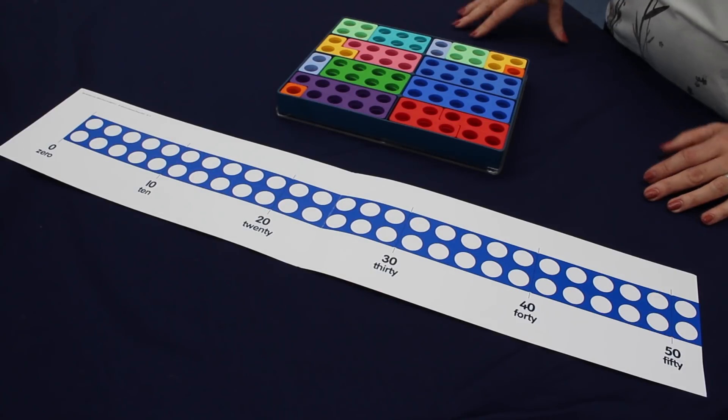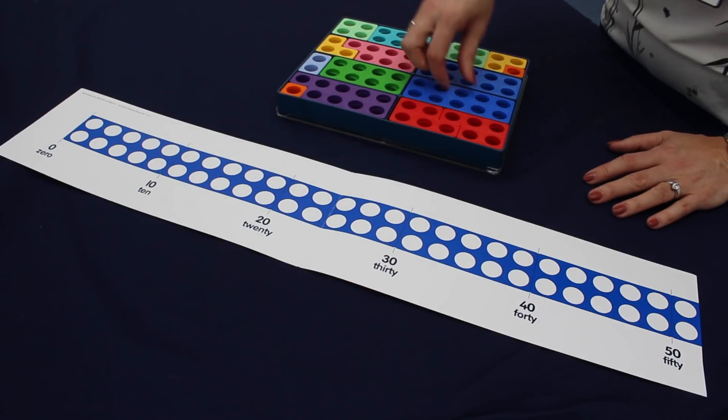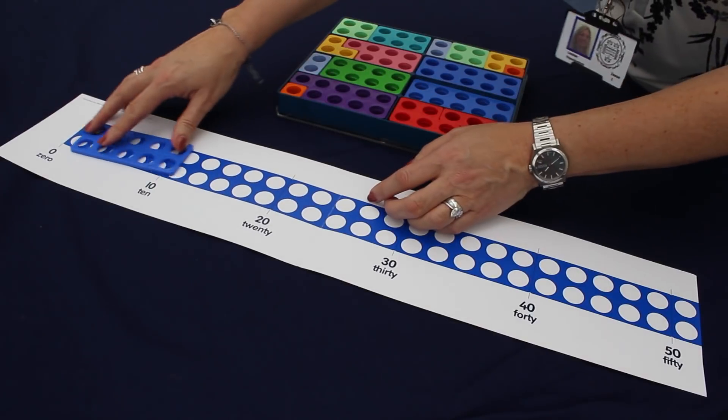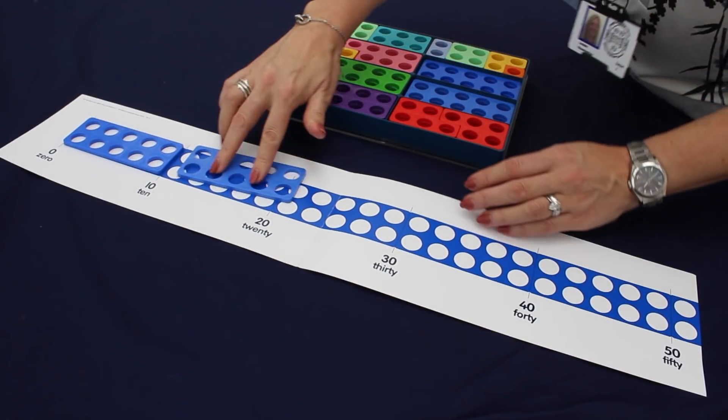Focusing now on rounding numbers, it's quite nice to use the tens number line. So if you just pick a number, for example, 28.